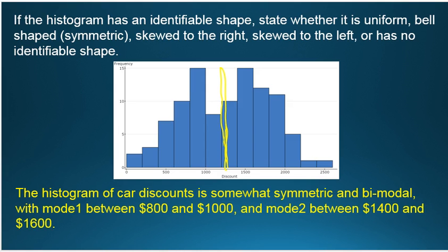with mode one being between $800 and $1,000, mode two being between, as we've already stated, $1,400 and $1,600. And that is the interpretation when I ask you to interpret a histogram.